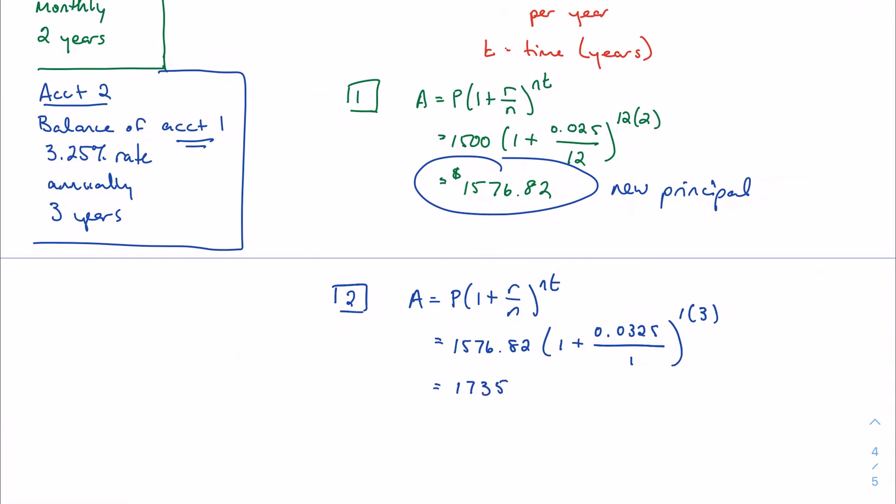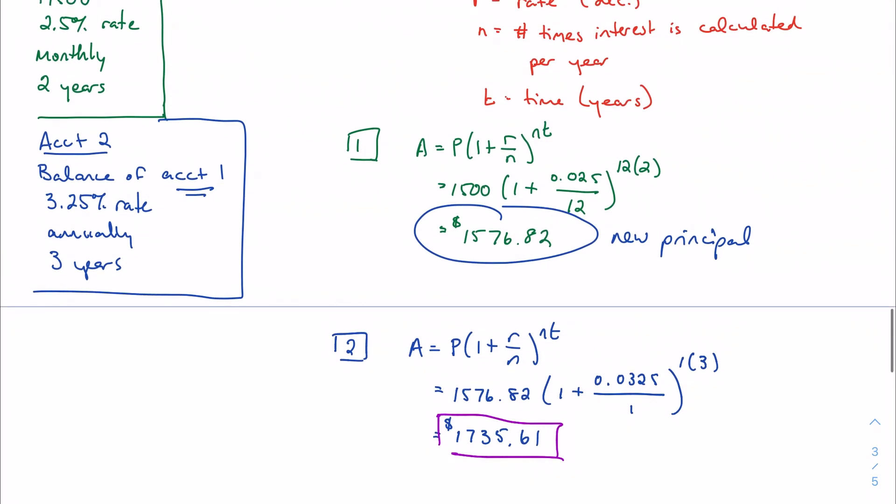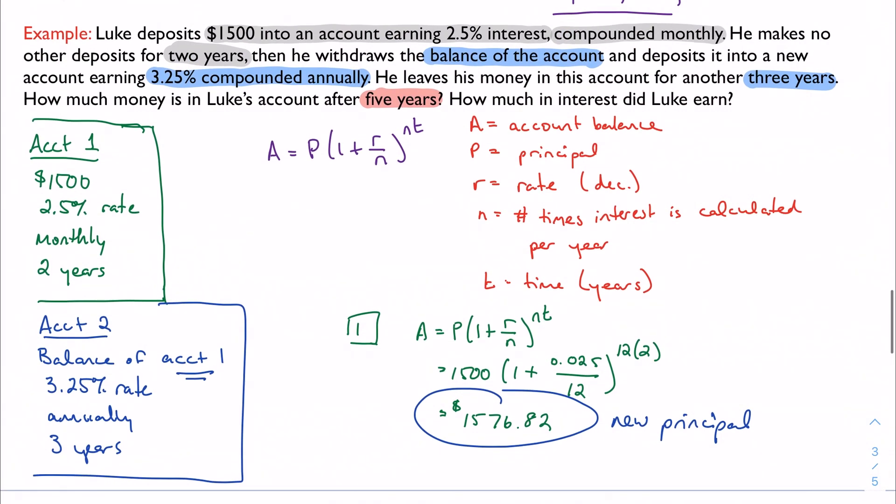You just have to read carefully to know what's going on and what to plug in where. Because like I said earlier, that paragraph is dense. That paragraph is overwhelming. And that's okay. But we can't panic. We have to take a step back. And we really have to think about what they're trying to give us and what they're asking us to do. So at the end of the five years, this is his account balance. 1735.61.